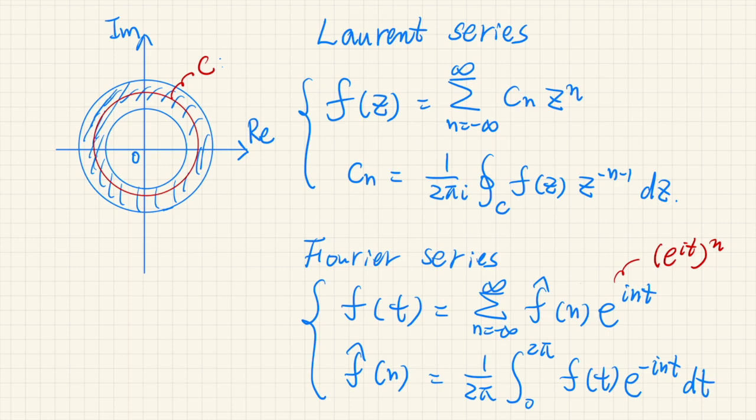Alright, when a complex function f is analytic in this ring region around the origin, then it can be expanded as a Laurent series like this, where this power n runs from negative infinity to positive infinity, and this coefficient cn is determined by this integral.